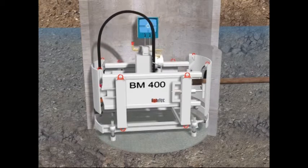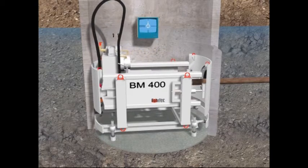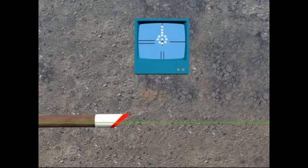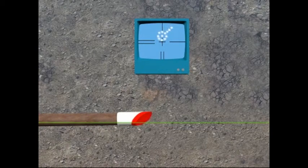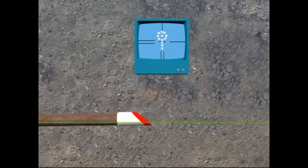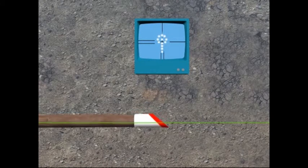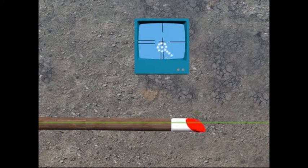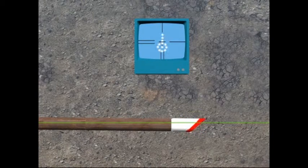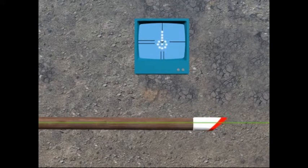The pilot rods are jacked into the ground without rotation, but if any deviation from the intended alignment is visible on the monitor, the jacking is stopped and the pilot head is rotated to correct the deviation when the jacking procedure continues. The inclined plane on the pilot head creates a reactional force from the surrounding soil to achieve the steering correction.